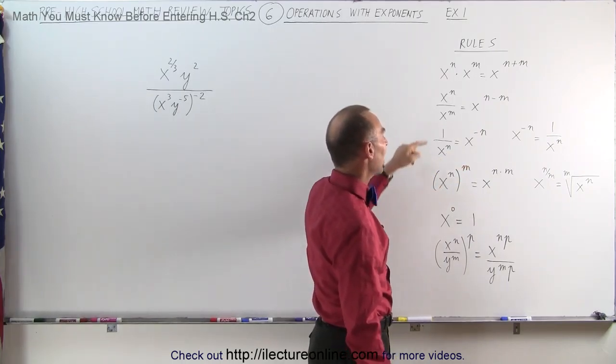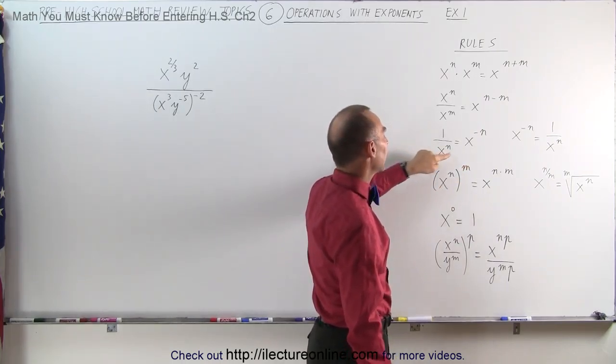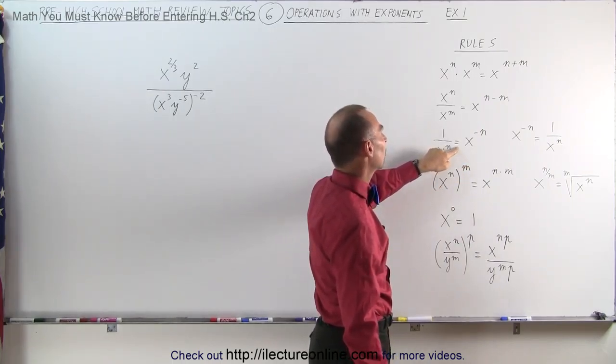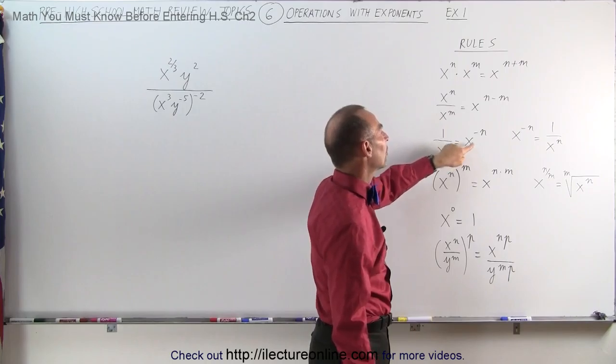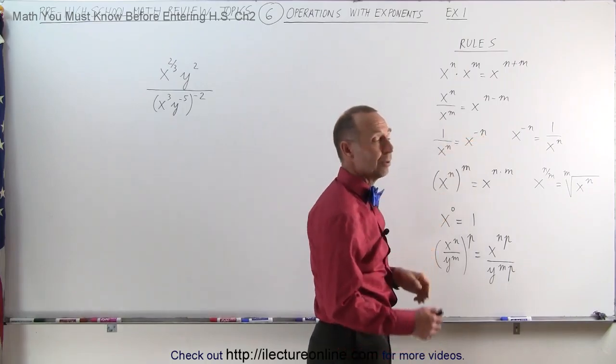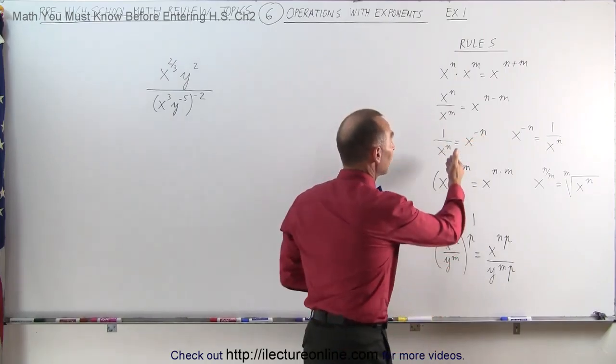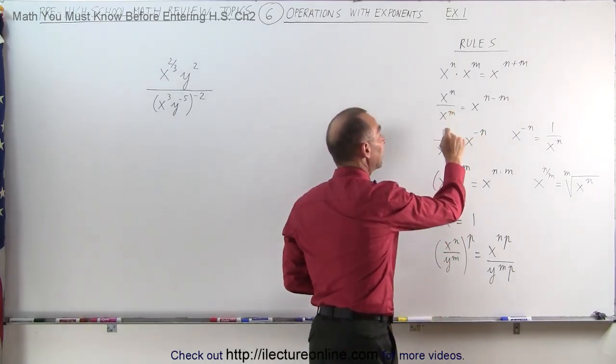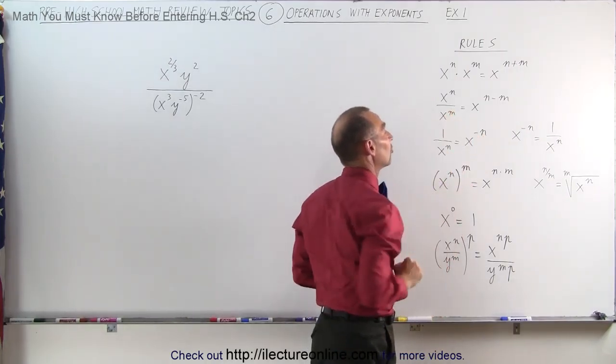If you have something that looks like 1 over x to the n power, this can be written as x to the minus n power. By simply bringing it to the numerator, it changes the sign.